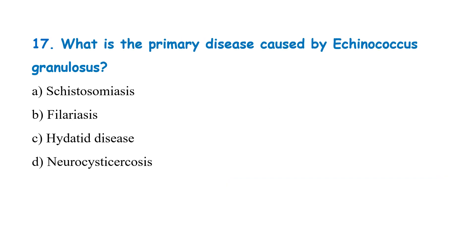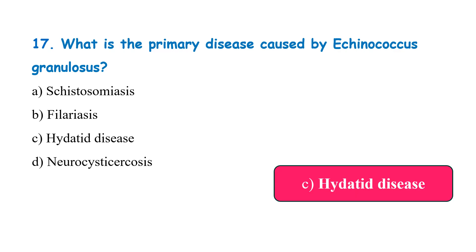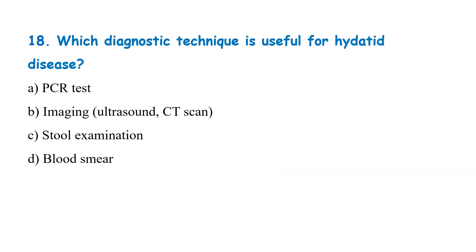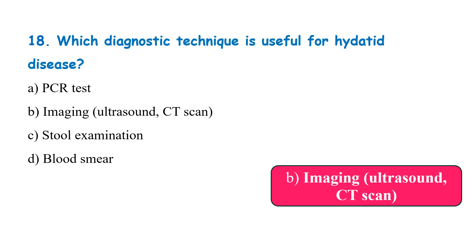What is the primary disease caused by Echinococcus granulosus? Schistosomiasis, filariasis, hydatid disease, or neurocysticercosis? The correct answer is hydatid disease. Which diagnostic technique is useful for hydatid disease? PCR, imaging with ultrasound and CT scan, stool examination, or blood smear? The correct answer is imaging with ultrasound and CT scan.